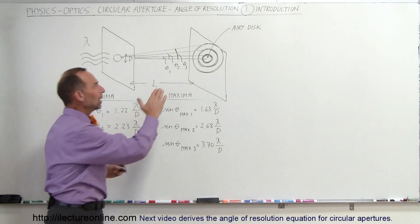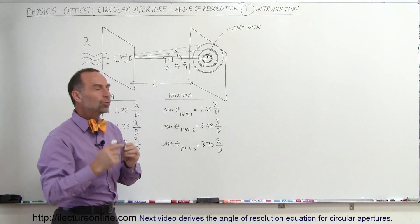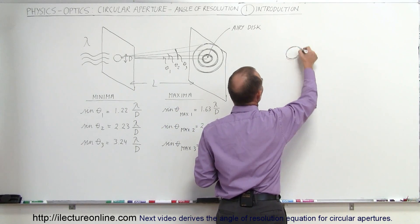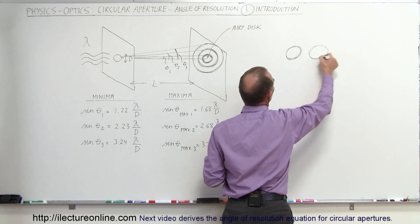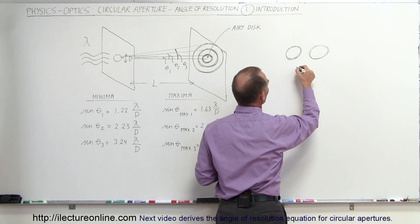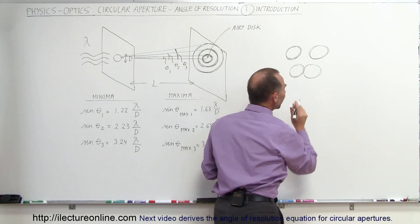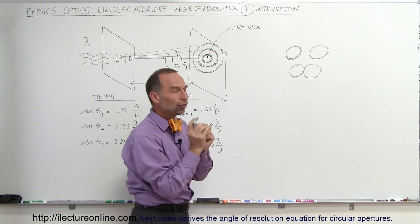So, what happens is, in order for us to be able to resolve two objects side by side, you want the Airy disks to be far enough apart from one another. So, when they're like this, we have no problems to resolve them. When they get closer together, it becomes more and more difficult.